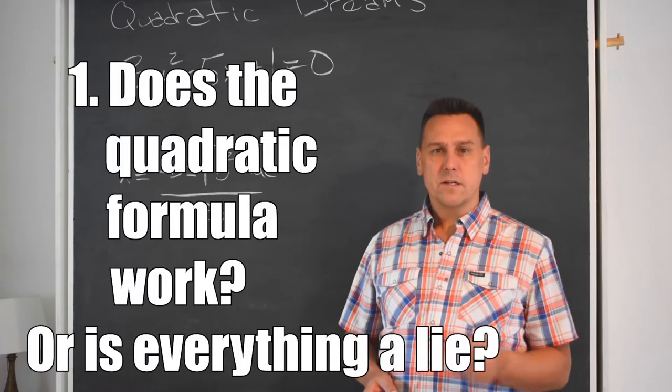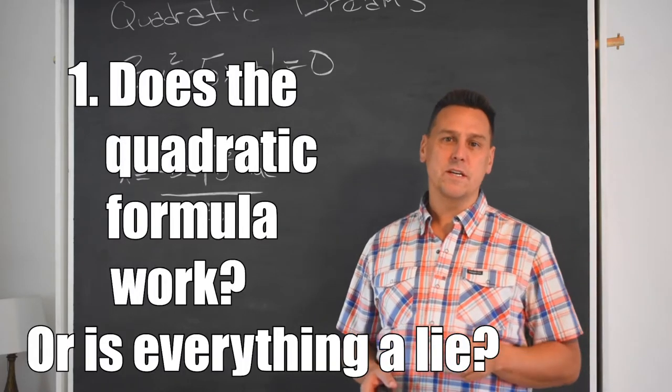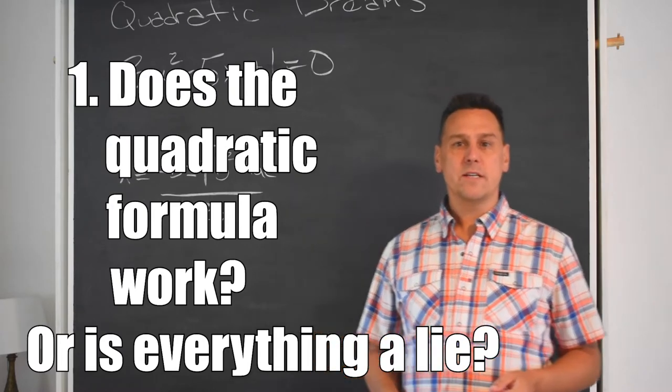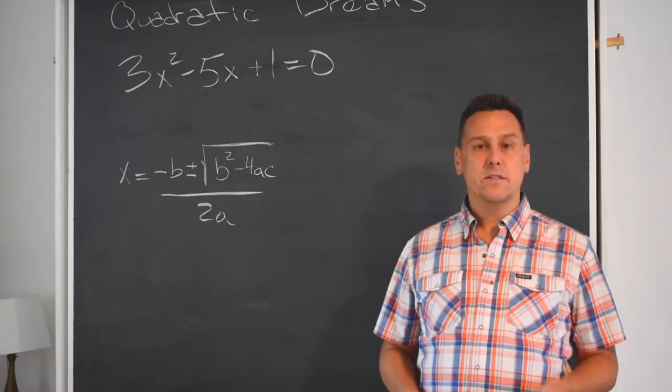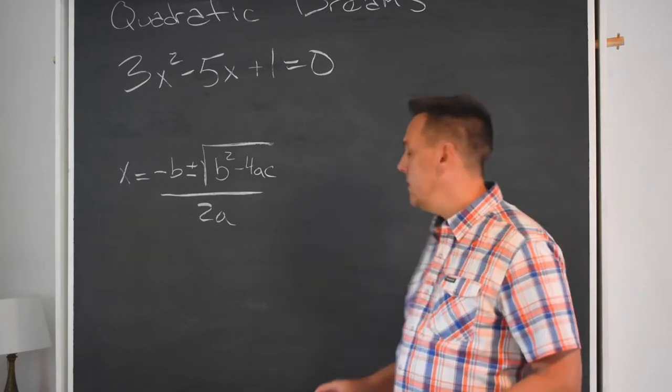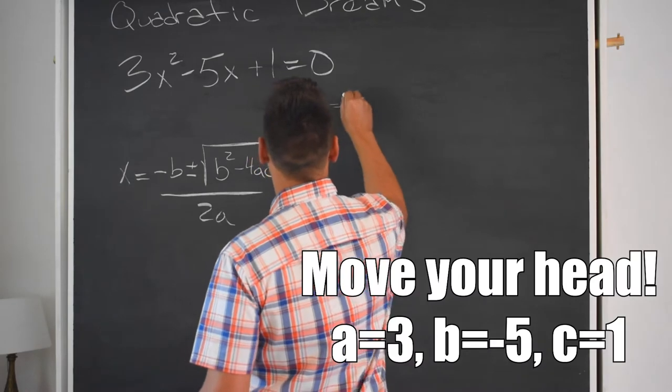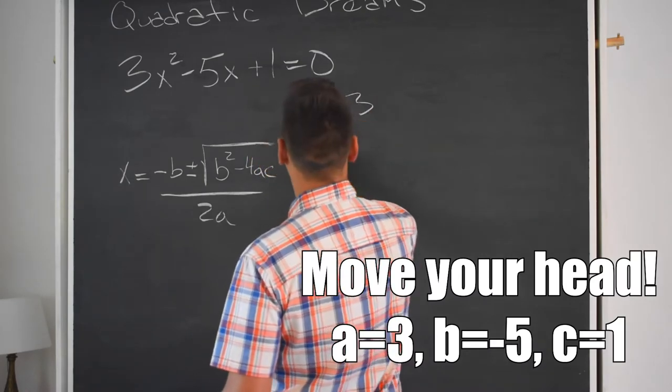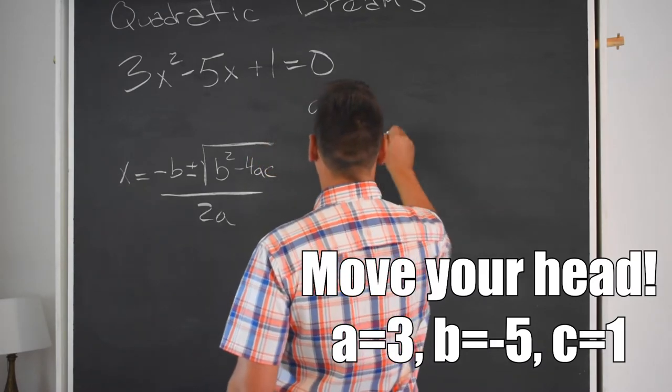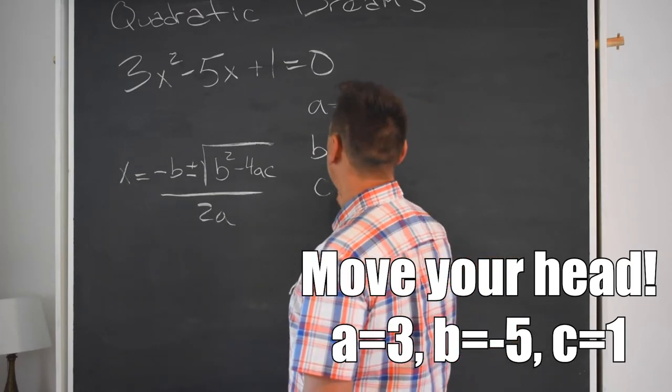First question though, does the quadratic formula actually solve this problem? Just about, as we'll see. The student needs to connect the generic constants A, B, and C to the coefficients actually given in the problem. In this case, we can tell that A should be 3, that B should be negative 5, and that negative is the thing that always messes people up, and that C equals 1.